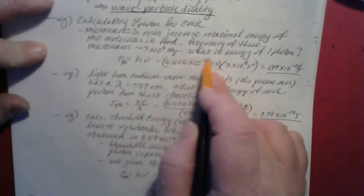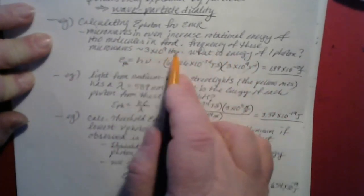The frequency of microwaves in an oven is about 3 × 10⁹ Hz. What is the energy of each photon? The energy of one photon equals hν: Planck's constant, 6.626 × 10⁻³⁴ J·s, times 3 × 10⁹ s⁻¹. The seconds units cancel, leaving joules. The result is 1.99 × 10⁻²⁴ joules — a very small amount of energy, but that's only one photon, and photons are considered to have no mass.